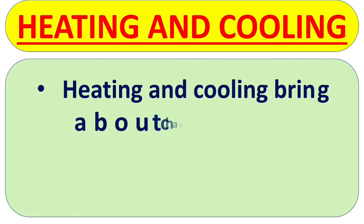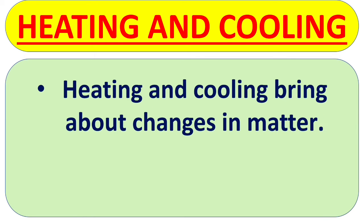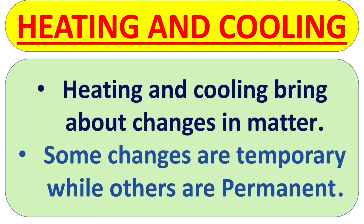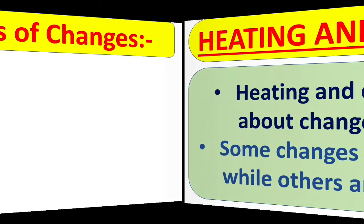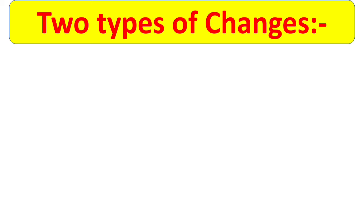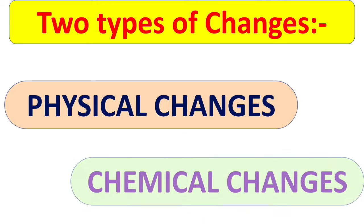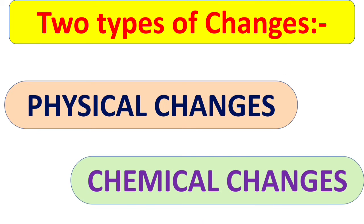Heating and cooling bring about changes in matter. Some changes are temporary while others are permanent. Basically, there are two types of changes — physical changes and chemical changes.